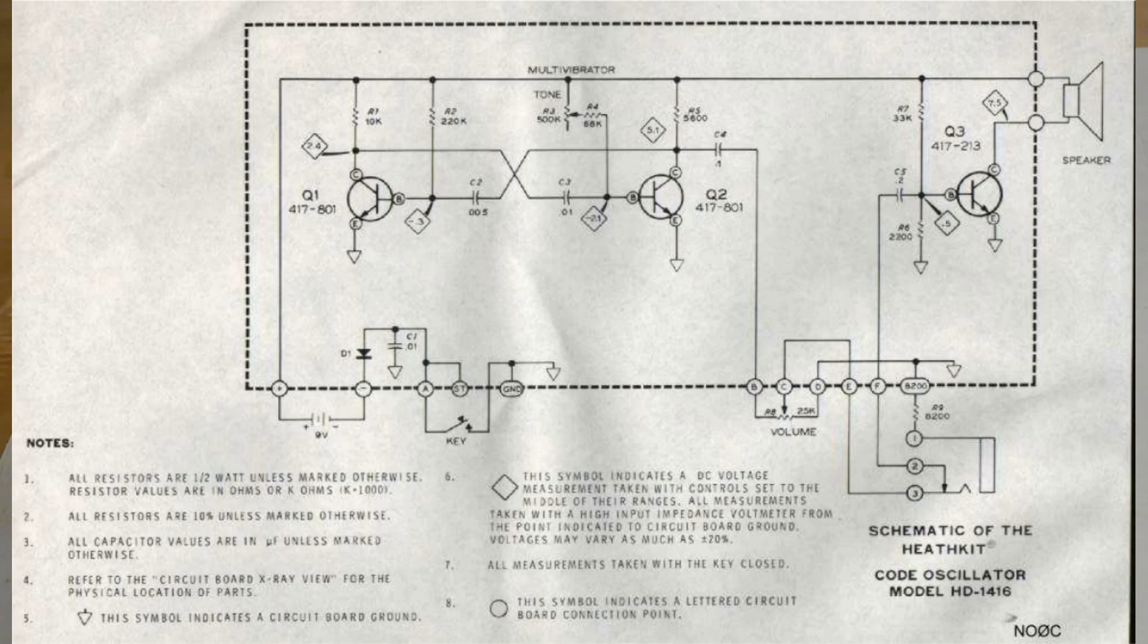Two transistors are used in an astable multivibrator circuit to produce a series of pulses at an audio frequency. This produces an approximate square wave. It's filtered slightly and passes to a volume control. This signal is sent to the headphones when connected. A third transistor amplifies the signal further to drive the speaker. The diode allows the unit to be connected across the transmitter by blocking any negative voltage from the transmitter keying circuit.